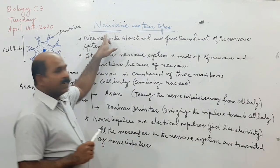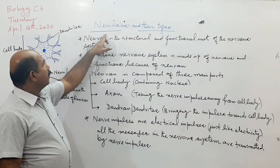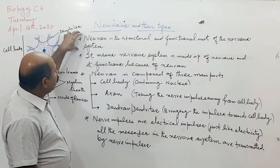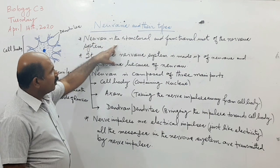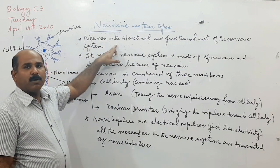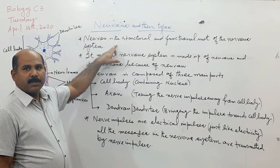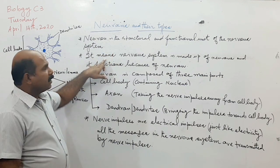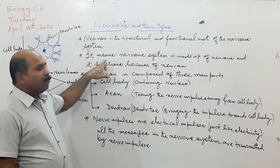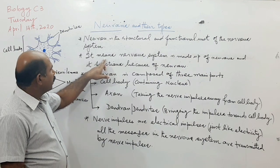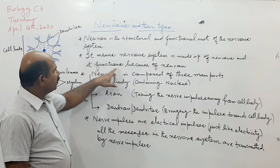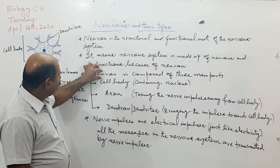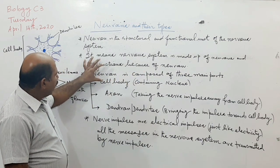You can see I have written here: neurons and their types. The neuron is the structural and functional unit of the nervous system. This means the nervous system is made up of neurons and it functions because of neurons.